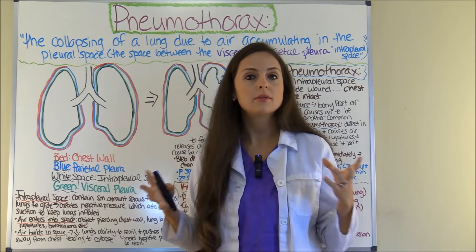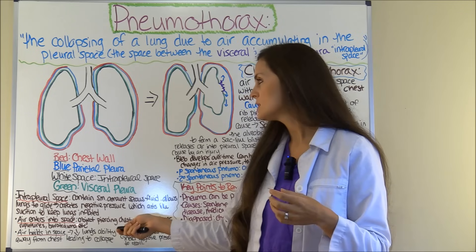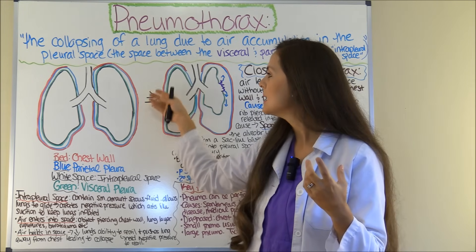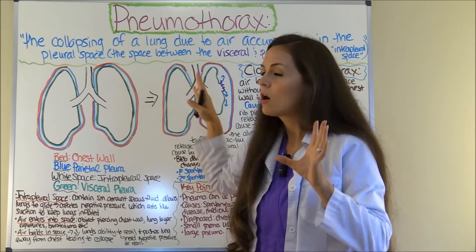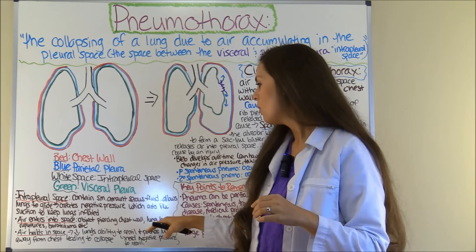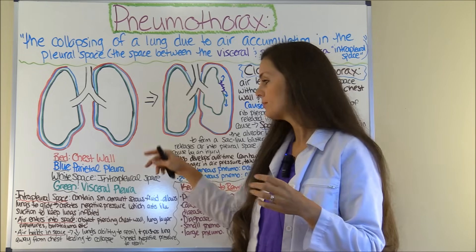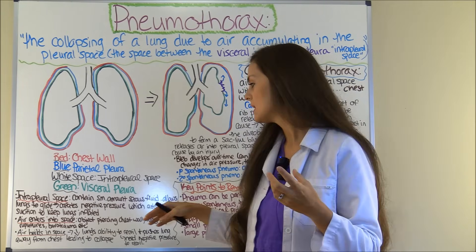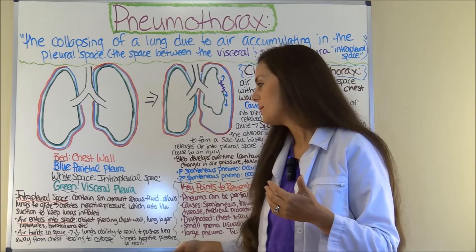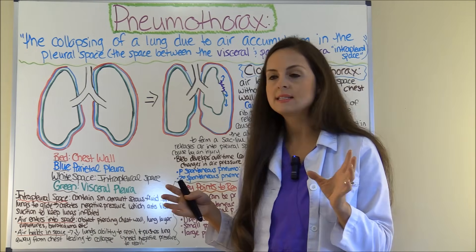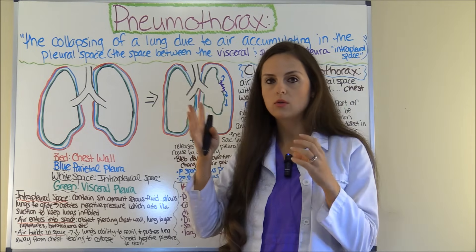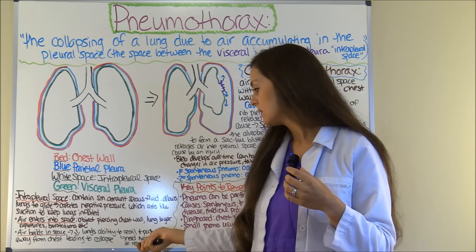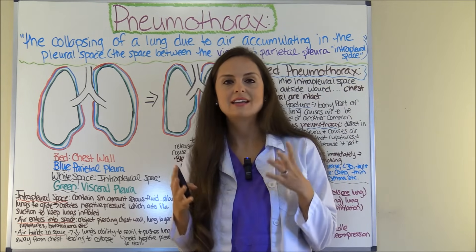If anything is added into this space, like with a pneumothorax, your lungs collapse — they thrive on negative pressure, and this negative pressure acts like suction to keep your lungs inflated. When air enters into this space, it can happen through an object piercing through the chest wall, giving an open pneumothorax where outside air enters and pushes on the lung causing collapse. Or the visceral pleura ruptures, releasing inhaled air into the intrapleural space — that is a closed pneumothorax. Or barotrauma from mechanical ventilation. As air builds in this space, it decreases the ability of the lungs to recoil on the affected side, pushing the lung away from the chest wall and leading to collapse.